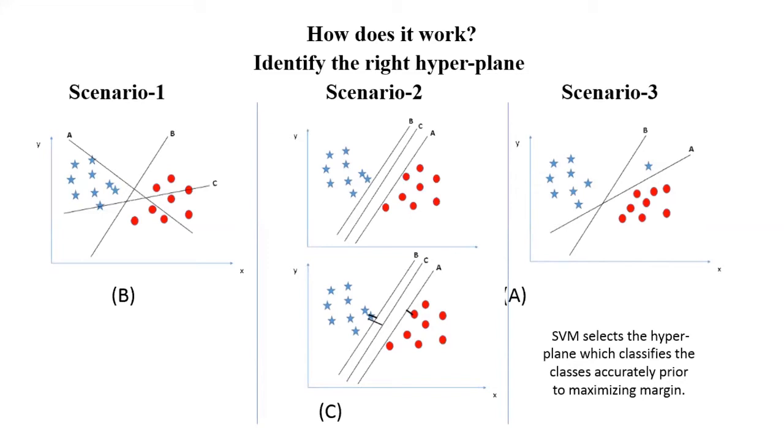For scenario three, hyperplane B has higher margin compared to A. But here is the catch. SVM selects the hyperplane which classifies the classes correctly prior to maximizing margin. Here, hyperplane B has a classification error and A has classified all correctly. Therefore, the right hyperplane is A.